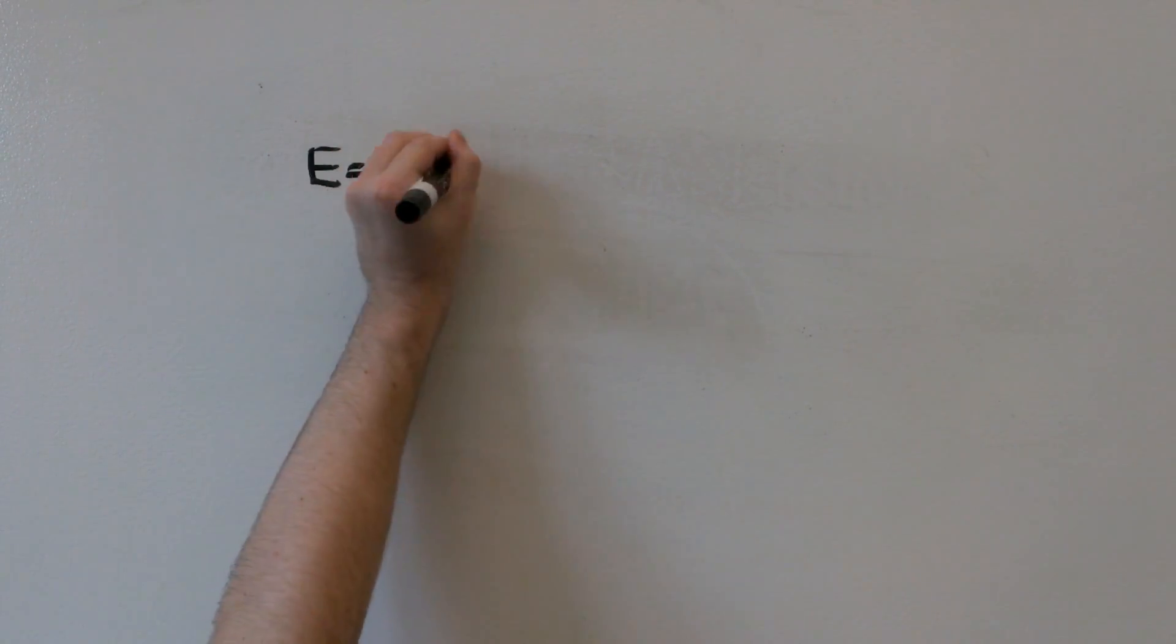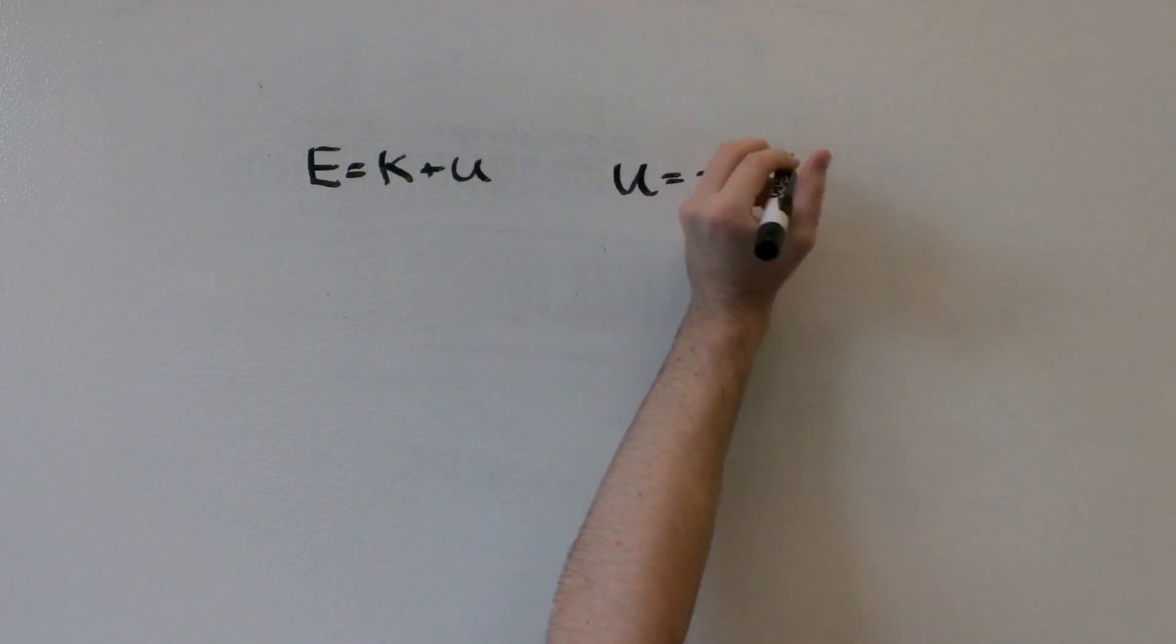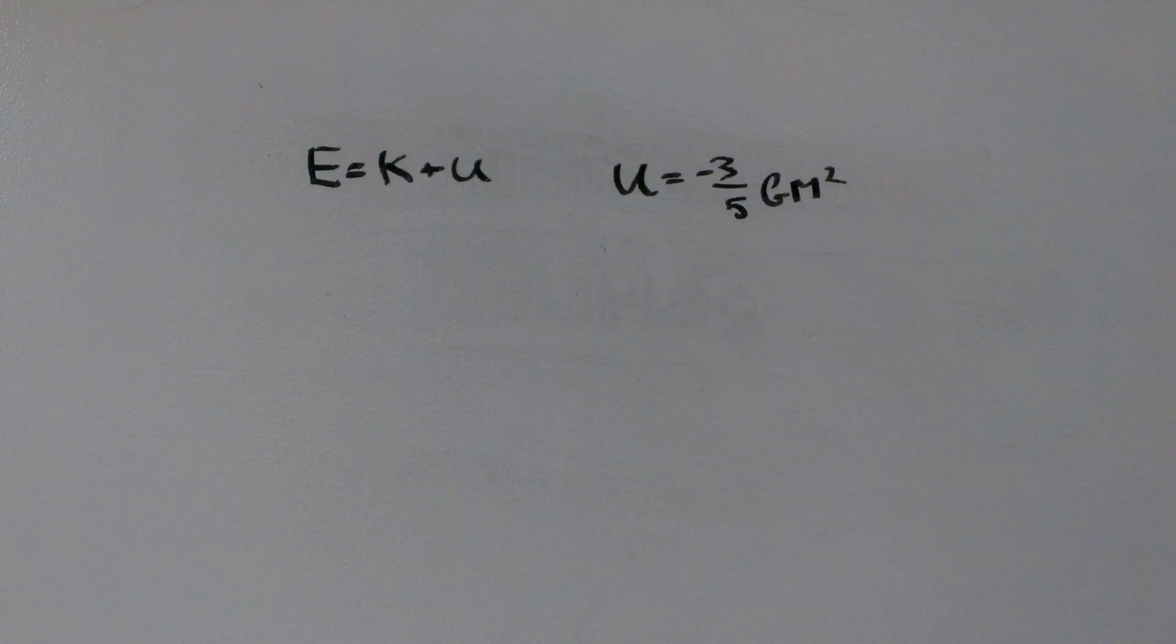There is a simple way to understand the limit and approximate it without getting into too much complexity. First, we examine a star and only two sources of energy, the gravitational energy and the kinetic energy of the particles within. Hence, the total energy is simply just the sum of these two.